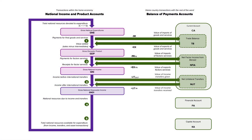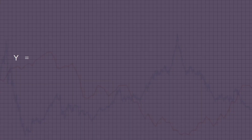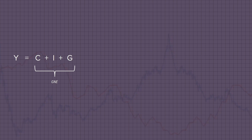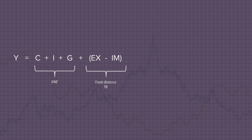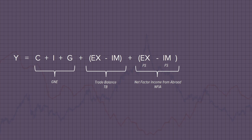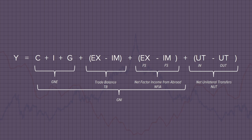So to summarize: we start with gross national expenditure, GNE. We add in the trade balance — exports minus imports — that gets us to GDP. From GDP, we add in net factor income from abroad, that gets us our gross national income. And then if we add in net unilateral transfers, that gets us to gross national disposable income.